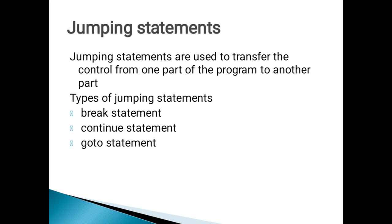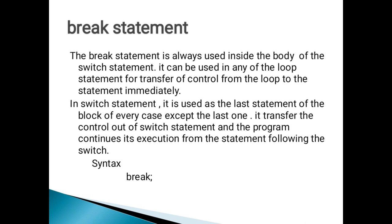After this we come to jumping statements. We have already read two types of statements — decision making statements and looping statements. The third type is jumping statements. As the name suggests, jumping statements transfer control from one place to another in the program. There are three types: break statement, continue statement, and goto statement.